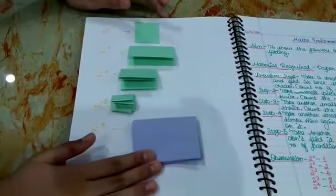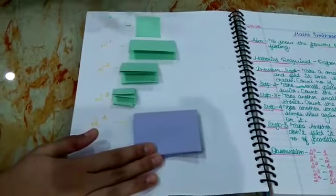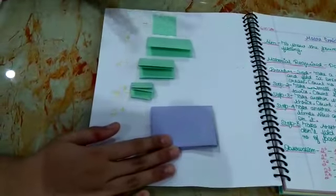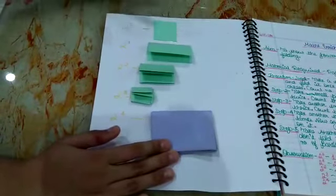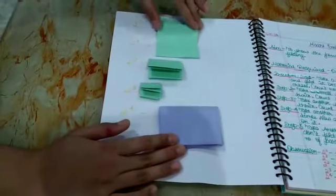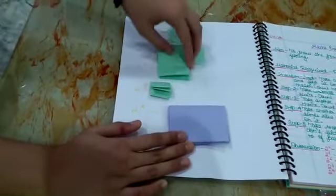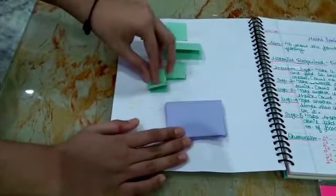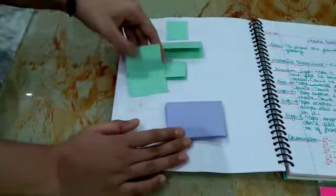Now 2 raised to the power 0 is 1, as we discussed earlier, and here we can see no partitions and just a plain sheet of paper. 2 raised to the power 1 is 2. 2 raised to the power 2 is 4, and 2 raised to the power 3 is 8.